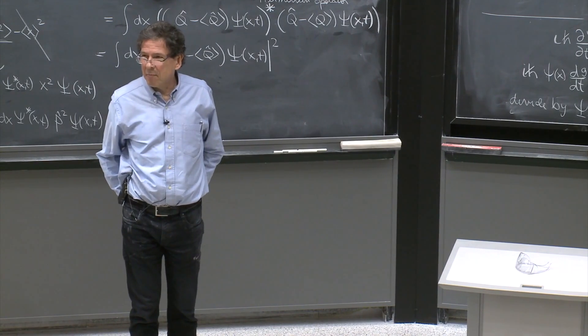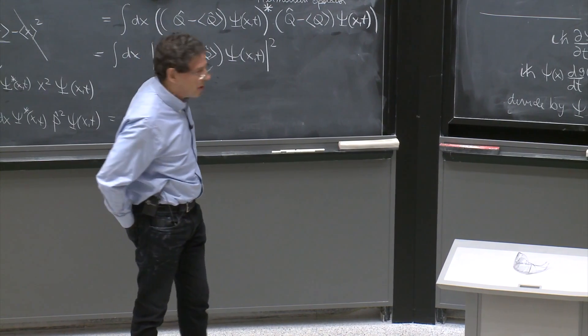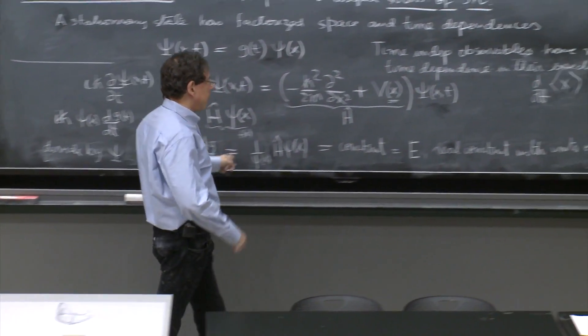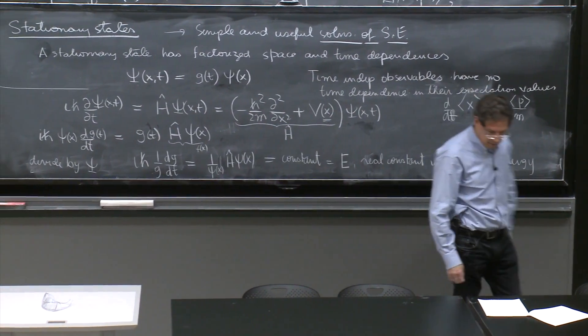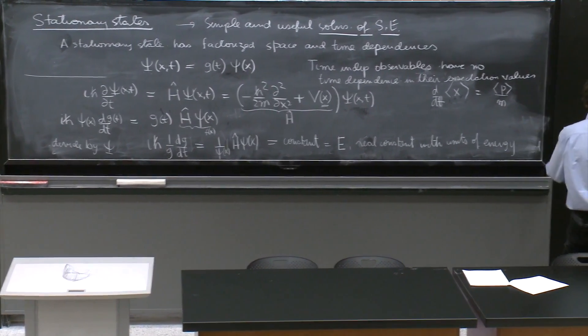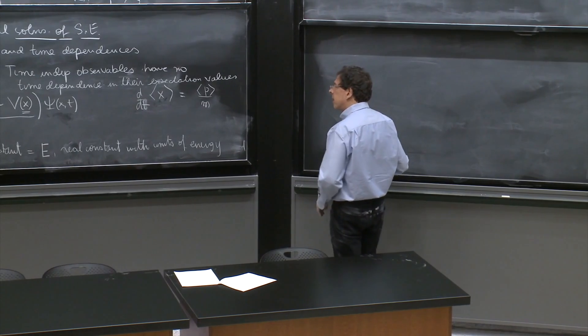And h-bar over time is units of energy, like in energy equals h-bar omega. So it has units of energy. The only thing that you maybe could say, why real? Quantum mechanics loves complex numbers. So why don't we put a complex E? We'll see what trouble you get if you choose something that is complex. So here we go. It's a real quantity.